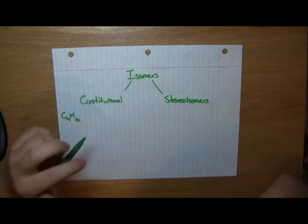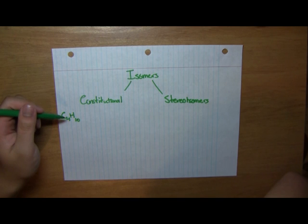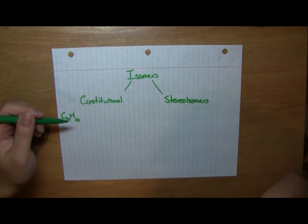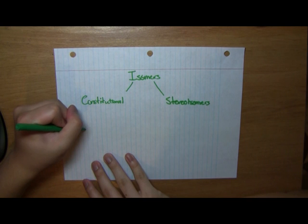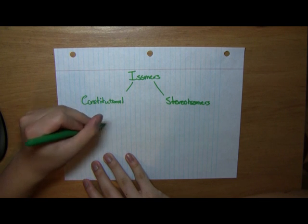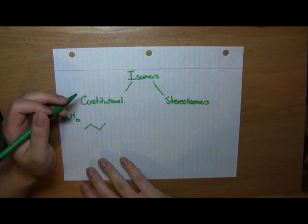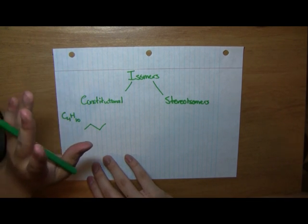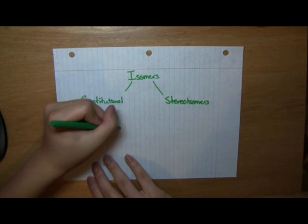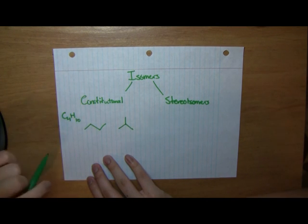What are the different molecules we can draw from this one formula? Well, we can first draw butane, meaning a straight 4-carbon chain. But we can also draw isobutane, meaning a 3-carbon chain with 1 carbon branching off the middle carbon, like so.